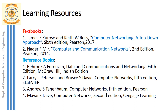The university has prescribed two textbooks and some reference books to study this course effectively. The first textbook is titled Computer Networking: A Top-Down Approach by James F. Kurose and K.W. Ross. The second textbook is titled Computer and Communication Networks by Nader Forouzan. We have four reference books as given in this slide.